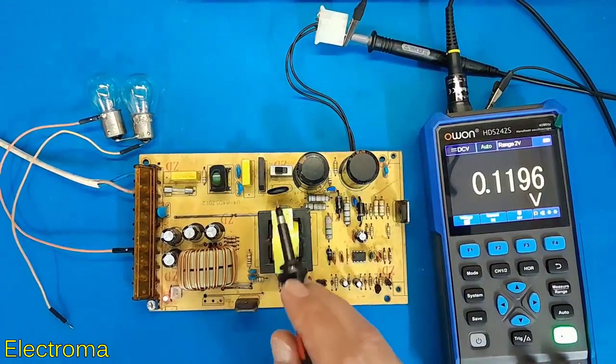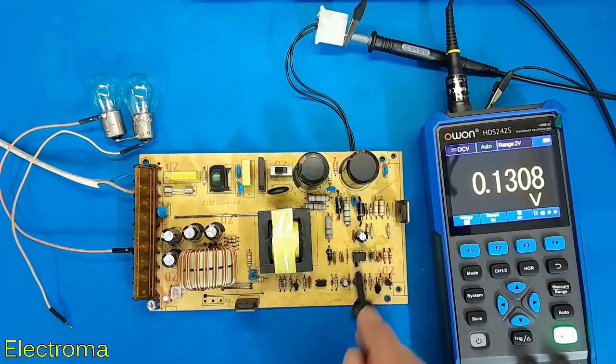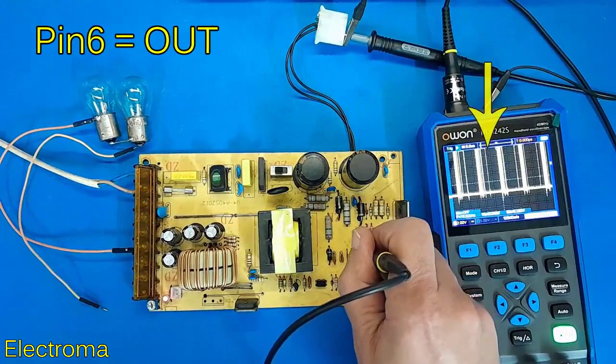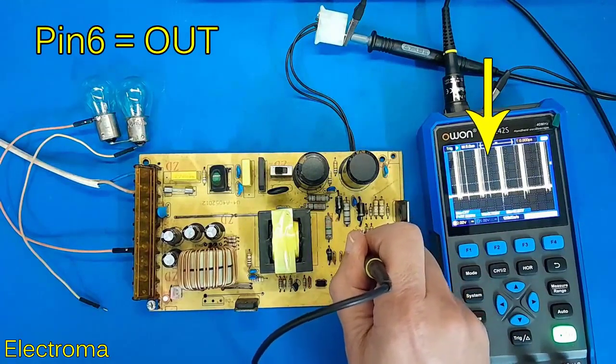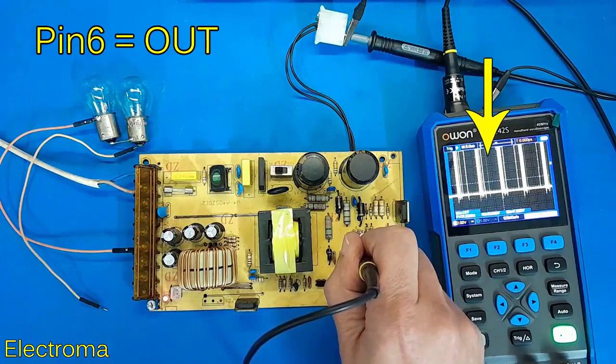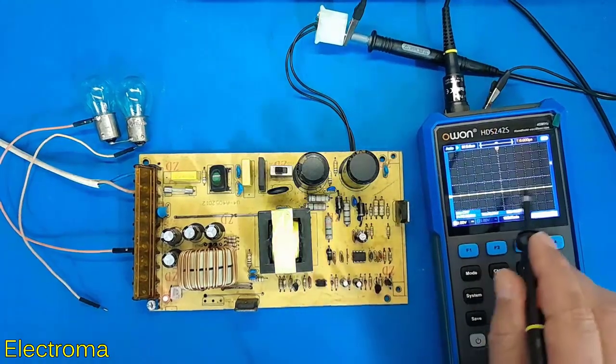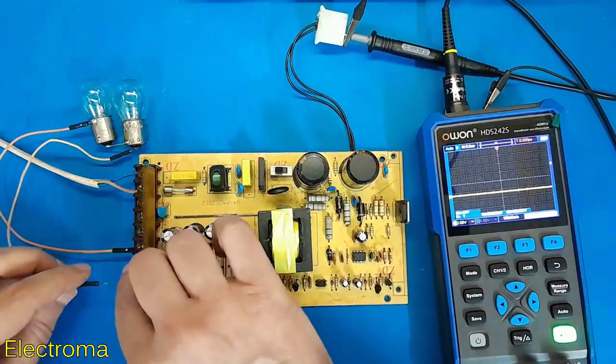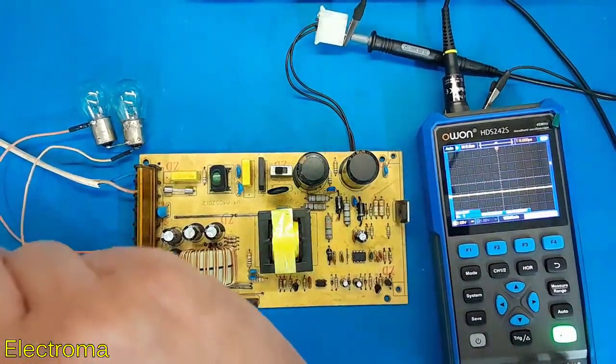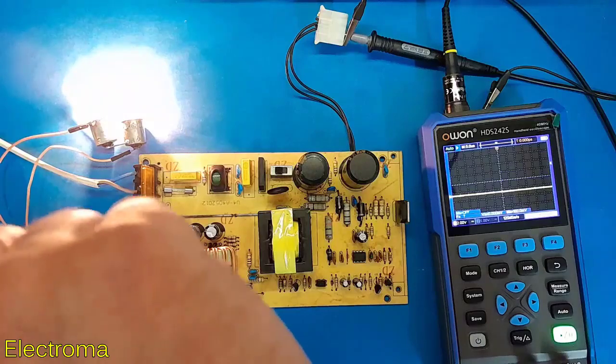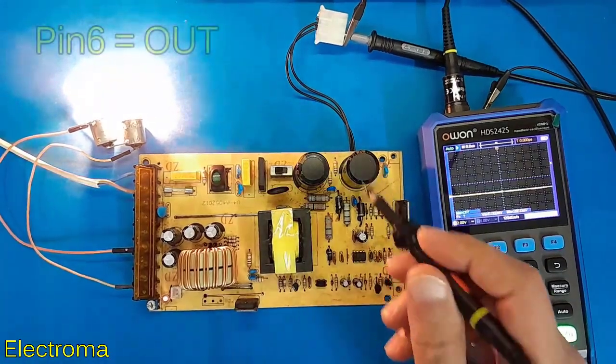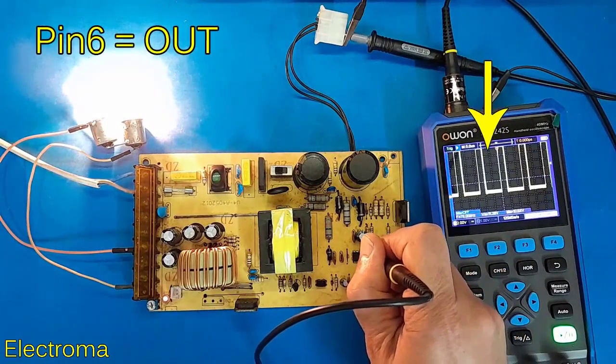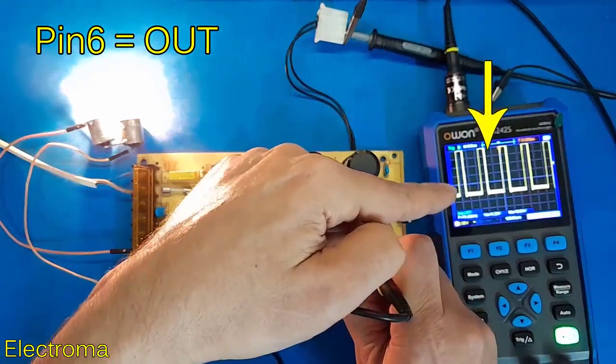Now with the help of an oscilloscope we measure the pulse output of pin 6 of the IC. The pulse is square because the consumer is not connected. The duty cycle amount is low. Well I will connect the lamp to the output. I will measure pin 6 again. As the consumer is connected the duty cycle increases.